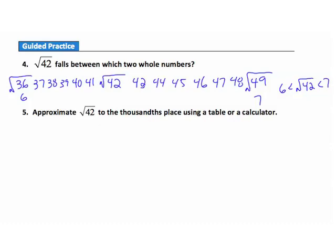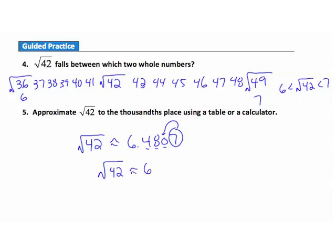Question 5: approximate the square root of 42 to the thousandths place using a table or calculator. Punching it in gives 6.4807. Tenths, hundredths, thousandths — the 7 tells us to round up the digit in the thousandths place. So the square root of 42 is approximately 6.481.